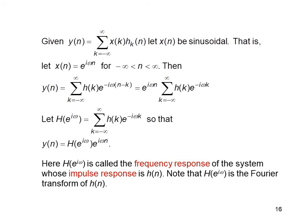If we have y[n] equals summation of x[k] times h[n minus k] and let x[n] be a sinusoidal wave, that is x[n] equals e to the power i*omega*n for all n, then y[n] equals e to the power i*omega*n times summation from minus infinity to plus infinity of h[k] times e to the power i*omega*k. So y[n] equals H times e to the power i*omega*n. Here H(e to the power i*omega) is called the frequency response of the system whose impulse response is h[n], and H(e to the power i*omega) is the Fourier transform of h[n].